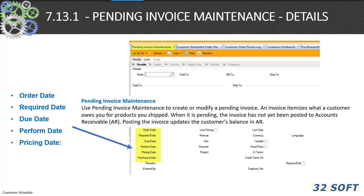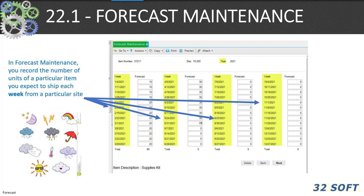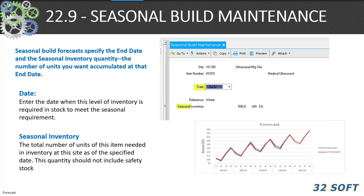In 7.13.1 pending invoice maintenance, you have the ability to review and modify order date, required date, due date, performance date, and pricing date. In 22.1 forecast maintenance, you can use forecast maintenance to drive demand into the MRP process, with the actual value calculated by several different methods. You can use 22.7 simulated forecast maintenance to create your own forecast processes. The seasonal build maintenance allows you to specify end dates for seasonality and determine how much inventory you want accumulated by various end dates.